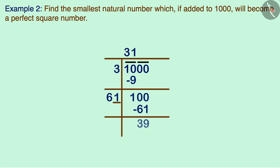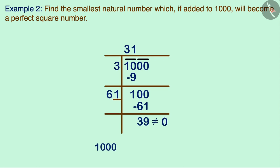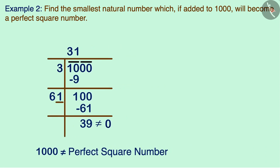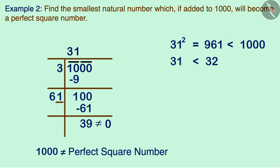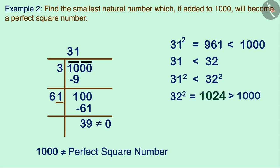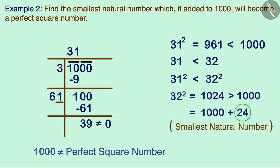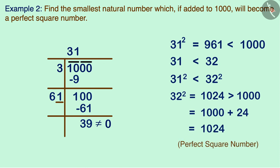We can see that we have got 39 as the remainder. Since the remainder is not zero, 1000 is not a perfect square. The quotient is 31, which shows that the square of 31 is smaller than 1000. Since 32 is larger than 31, the square of 32 will be larger than 1000. The square of 32 is 1024, so by adding 24 to 1000 we get the perfect square 1024.